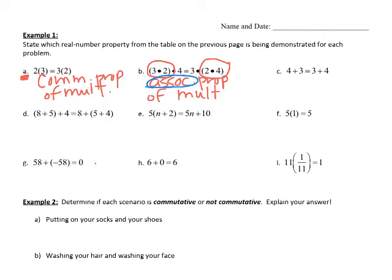The ones that don't have the grouping going on are going to be called commutative. Go ahead and take a look at these problems and do the best you can. There are a couple that are going to be the identity or inverse properties, but try to locate and identify each type of property we've gone over on the front side of the page.